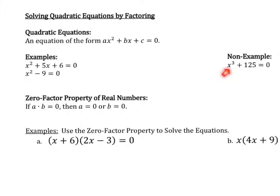A non-example of a quadratic equation is this example here. Even though this is a non-example, we should still be able to solve this by factoring because we know how to factor this type of equation. One of the main tools that helps us solve these types of equations is called the zero factor property of real numbers. Basically, that property states that if a times b equals zero — meaning if I multiply two things and their product is zero — then at least one of them has to be zero, because zero times anything is zero. So either a equals zero or b equals zero.